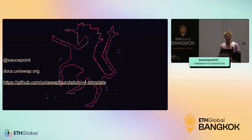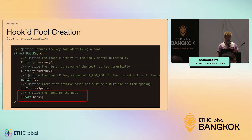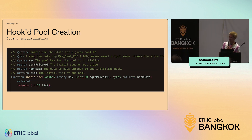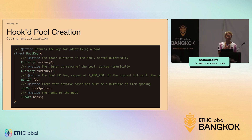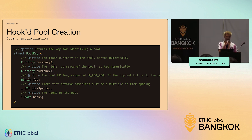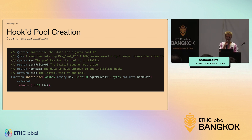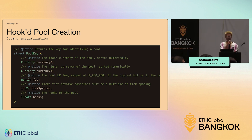Q: How do you connect a hook to a pool? A: Whenever you create a pool you specify the pool key, and inside the pool key there's an i-hooks field which is an address. So you specify the hook address when creating the pool. You deploy your hook as an entirely separate contract first, then register or create the pool on the core pool manager specifying that hook address.